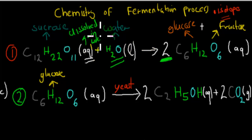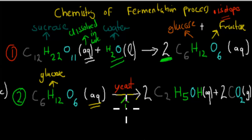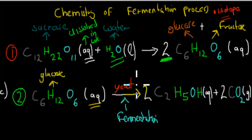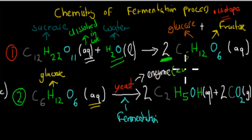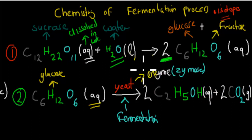This glucose, obtained by splitting sucrose with water, is still dissolved in water — still aqueous. Now we ferment it. In fermentation we have glucose, and we add yeast. The yeast produces an enzyme called zymase, and this enzyme makes the reaction — glucose turning into ethanol and carbon dioxide — go much faster. So this enzyme is the catalyst. We need yeast present because the yeast produces zymase, and zymase acts as a catalyst that speeds up the reaction.